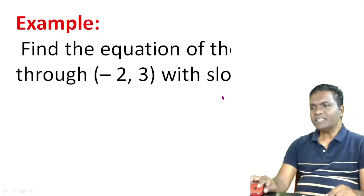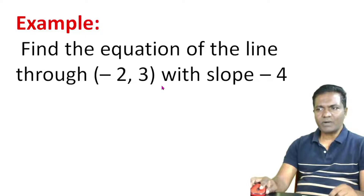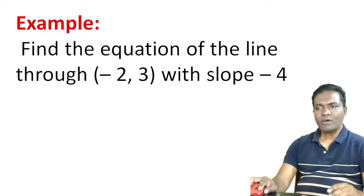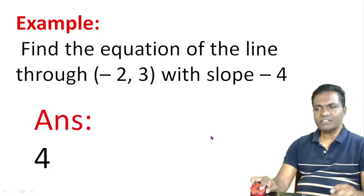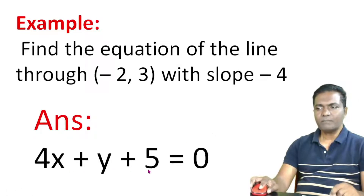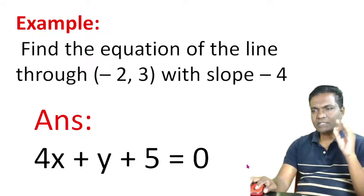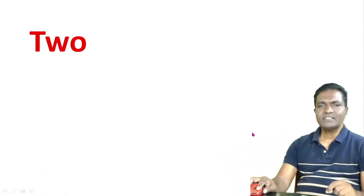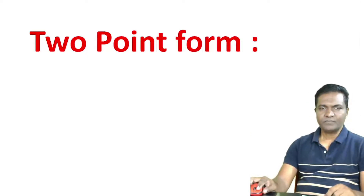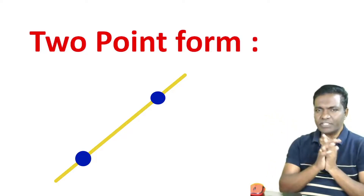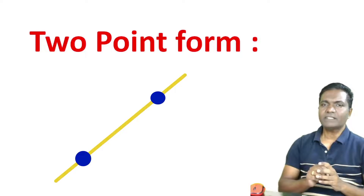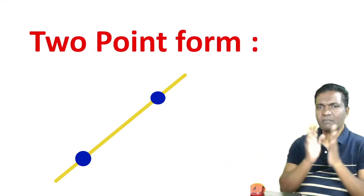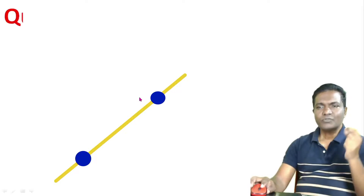Now try: find the equation of the line through (-2, 3) with slope -4. Pause the video, work it out. The answer is 4x plus y plus 5 equal to 0. Similarly, next we look at the two-point form of a straight line — when a line passes through two known points.